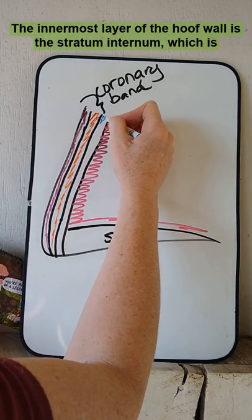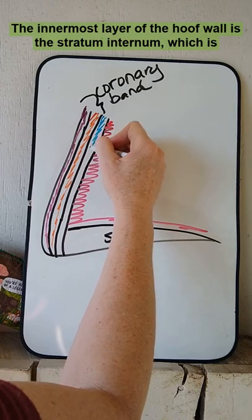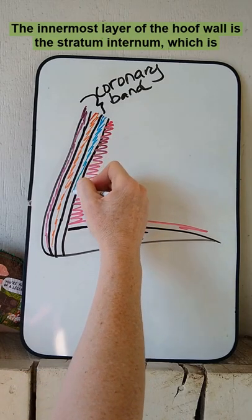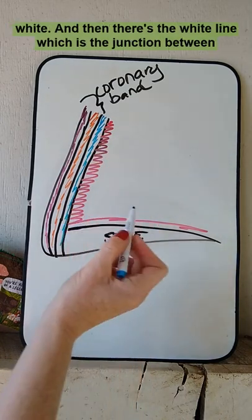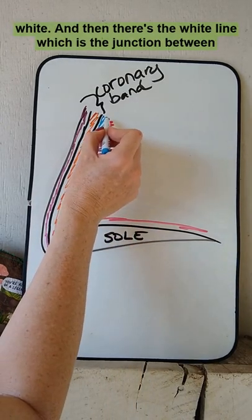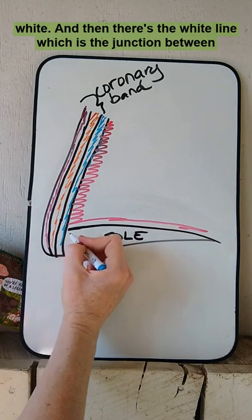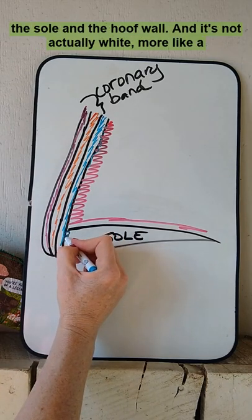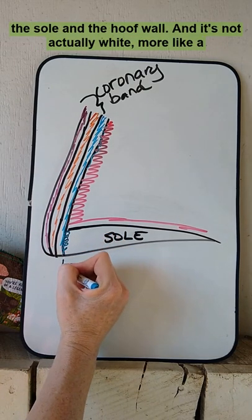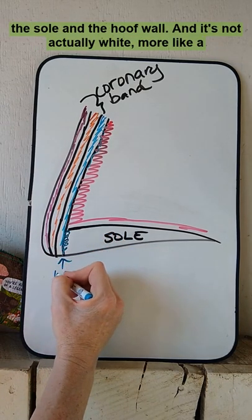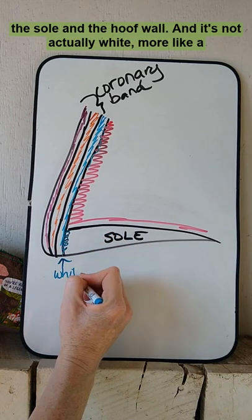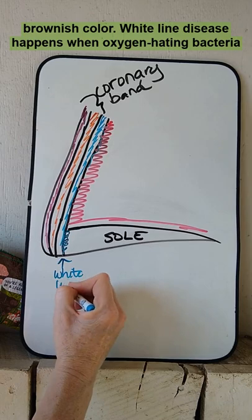The innermost layer of the hoof wall is the stratum internum, which is white. And then there's the white line, which is the junction between the sole and the hoof wall. And it's not actually white — more like a brownish color.